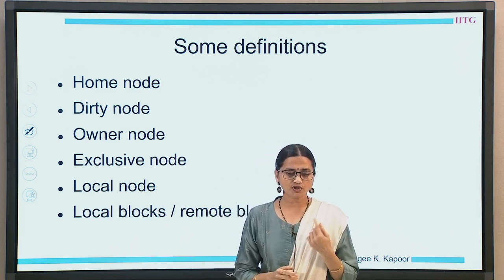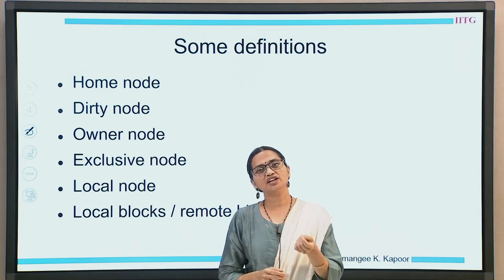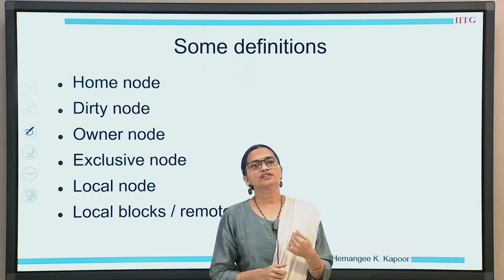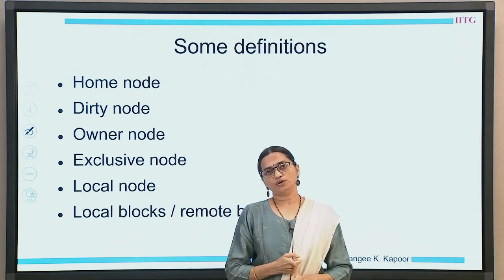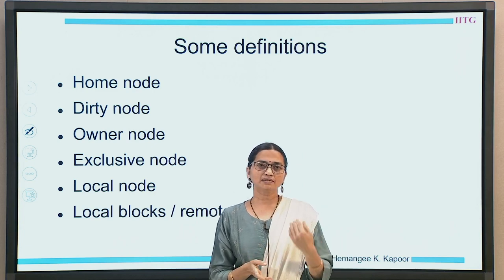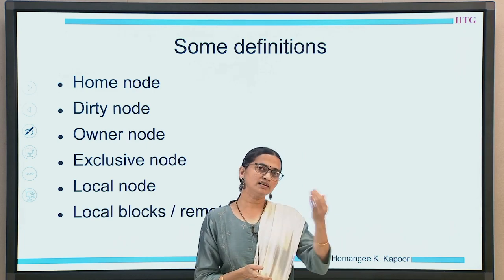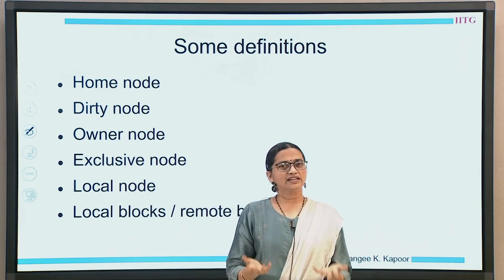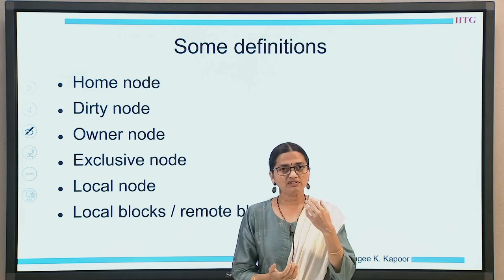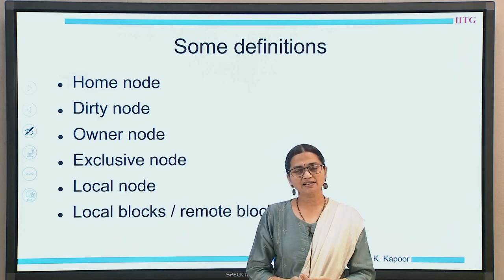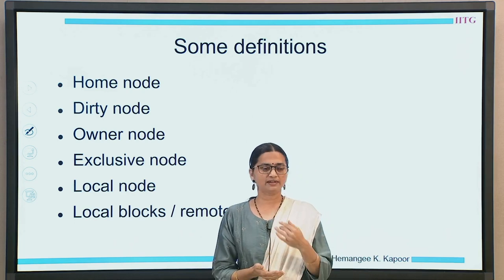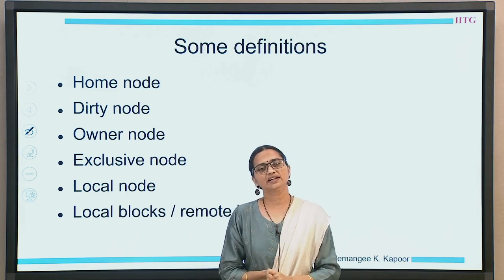Home node is also the node which is going to initiate a request. Then the concept of a dirty node — the dirty node is the node which has the block in the dirty state. Dirty state means it will be the provider of the data block. It will have to write back this data to the particular memory location when it evicts that data block.